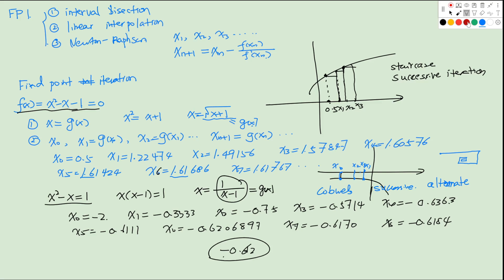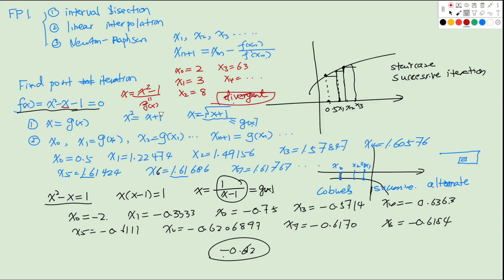Now let's consider another possible choice of g(x). One obvious choice is to move x to the right-hand side, giving x = x² - 1 as our g(x). If we plug in x0 = 2, we get x1 = 3, x2 = 8, x3 = 63, and x4 is even larger. So it seems we cannot converge to the solution — this choice of g(x) makes the sequence divergent and is not a good choice.